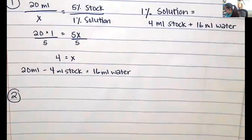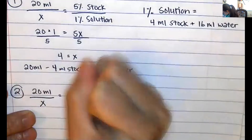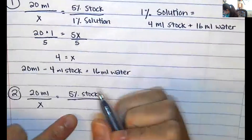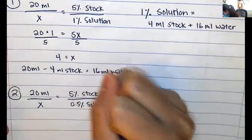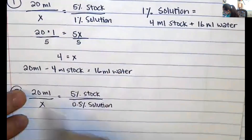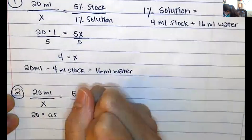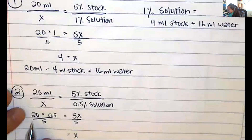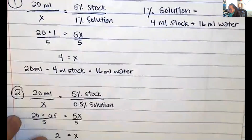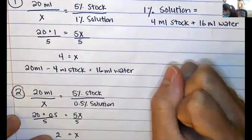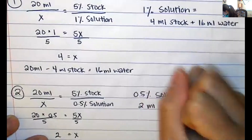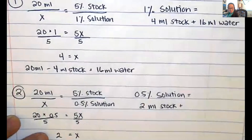For a 0.5% solution with a 5% stock: 20 over x equals 5 over 0.5. Cross multiplying: 20 times 0.5 equals 5x, so x equals 10 divided by 5, which is 2 milliliters of stock. Then 20 minus 2 equals 18 milliliters of water. So the 0.5% solution needs only 2 milliliters of stock and 18 milliliters of water.